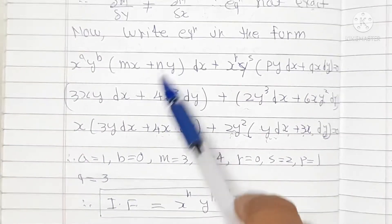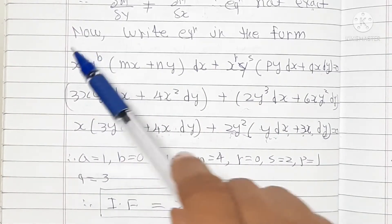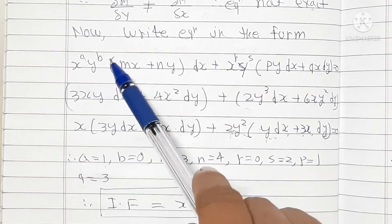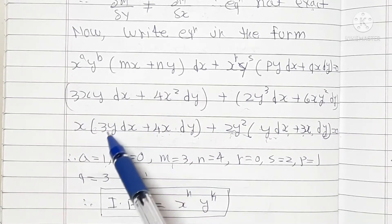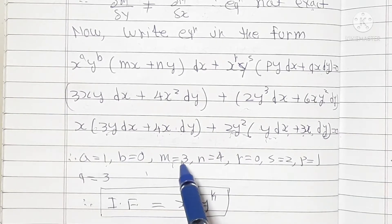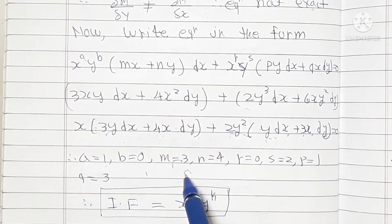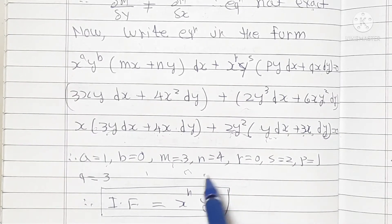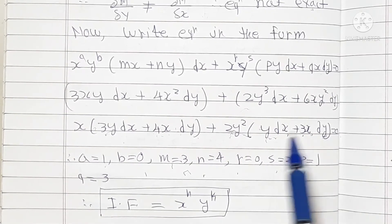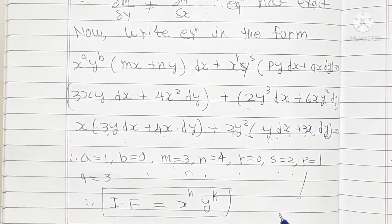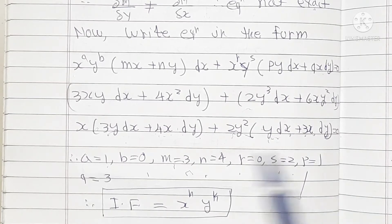Comparing with the standard equation: x^a gives a = 1, and since there is no y term, b = 0. From the bracket terms: m = 3, n = 4 for the first group, and r = 0, s = 2, p = 1, q = 3 for the second group.